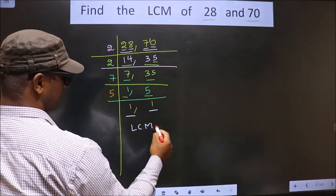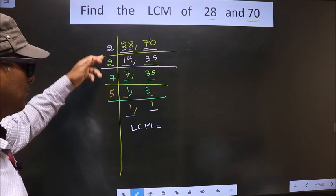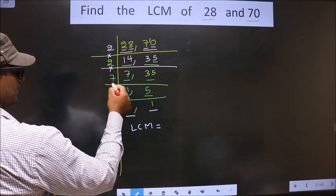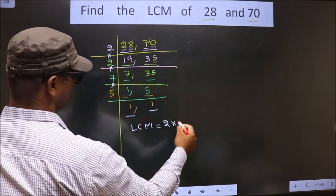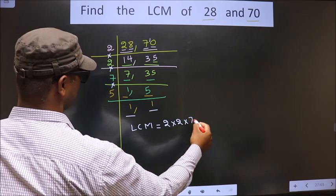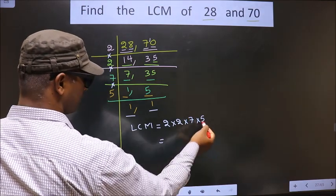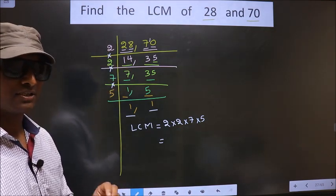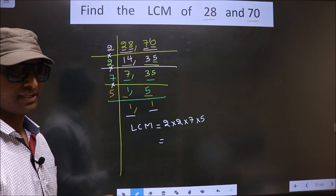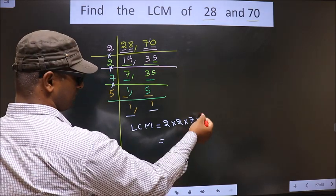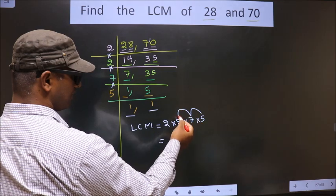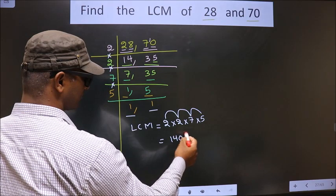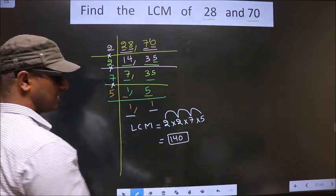So now our LCM is, LCM is the product of these numbers. That is 2 into 2 into 7 into 5. You multiply all these numbers. Whatever number you get that is your LCM. So let us multiply. 5 into 7, 35. 35 into 2, 70. 70 into 2, 140. So this is our LCM.